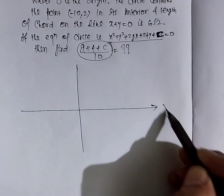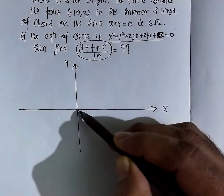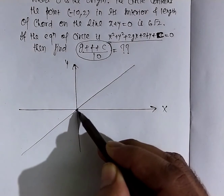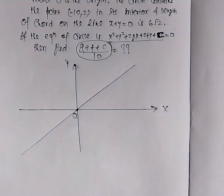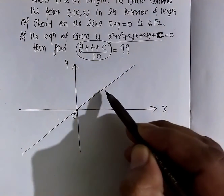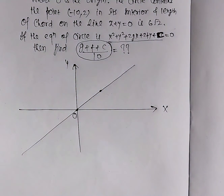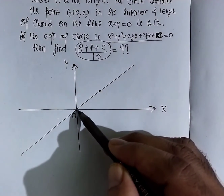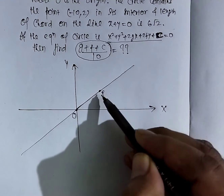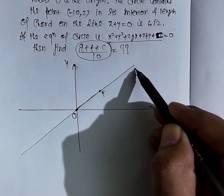पहले situation को graphically समझते हैं। x-axis, y-axis, and the line y = x. This is the origin O. The circle is touching this line at point P, and the distance of P from the origin is 4√2. Point P lies on y = x.